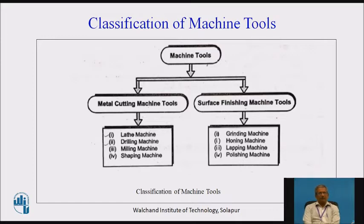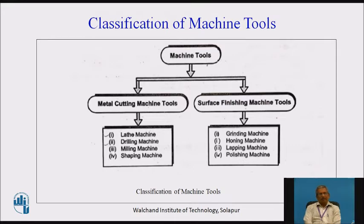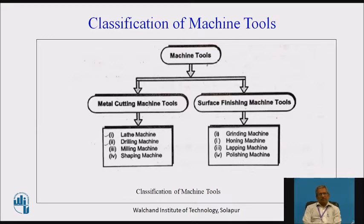The basic classification of machine tools is into metal cutting machine tools and surface finishing machine tools. In metal cutting machine tools, we can remove more material from surfaces, circumferential parts, or as per drawing. Examples include lathe machine, drilling machine, milling machine, and shaping machine. New machines run on computer programming also exist. Lathe, drilling, milling, and shaping machines are the main metal cutting machine tools.